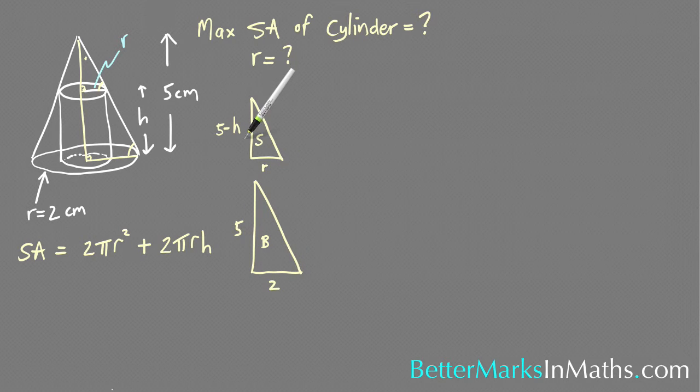Because I want h in terms of r I'm going to start with this one, so doing small on big. This side from the small triangle, 5 minus h, on its corresponding side which is 5, is equal to this side r over 2.